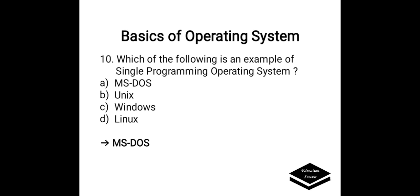Which of the following is an example of a single programming operating system? Options are A. MS-DOS, B. Unix, C. Windows, D. Linux. Correct answer is A, MS-DOS. MS-DOS is an example of a single programming operating system.